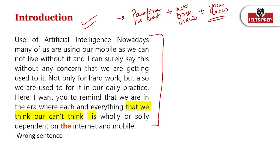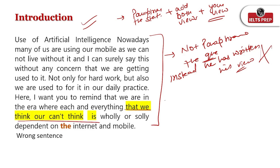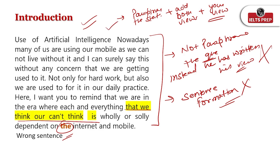Here is what the student has done — he wrote 'Use of artificial intelligence: nowadays many of us are using our mobile as we cannot live without it and it can surely say this without any concern that we are getting used to it.' The student has not paraphrased the question; instead he has written his own view directly. Do not do that. The sentence formation is also absolutely wrong, and he has missed using the proper article.